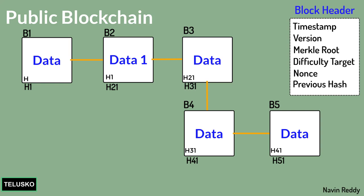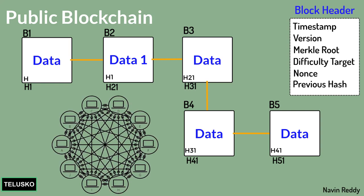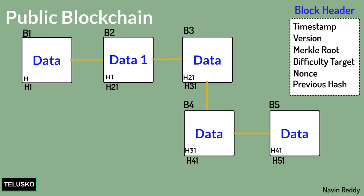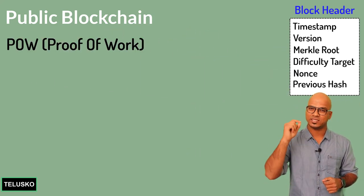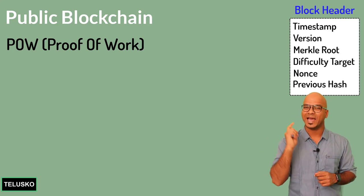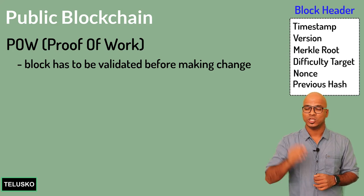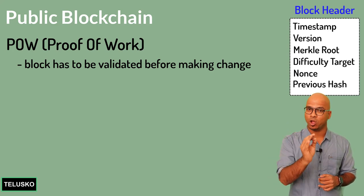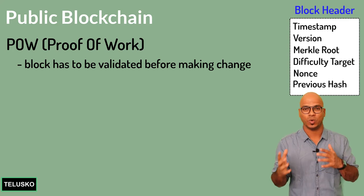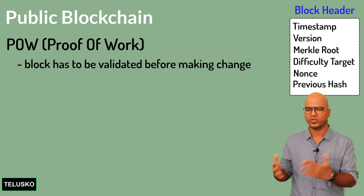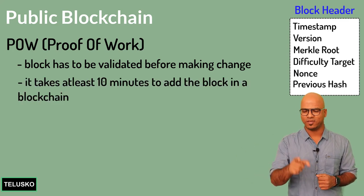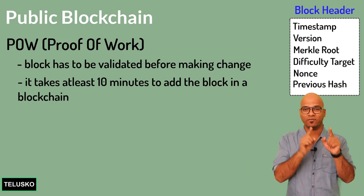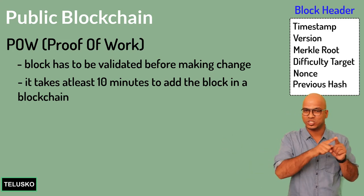You might think supercomputers could handle that. However, that's where proof of work comes in. Every time you want to add or modify a block in a public blockchain, it must be validated. This validation — proof of work — takes at least 10 minutes per block. So even changing one block out of five would require waiting 50 minutes to update the entire chain.